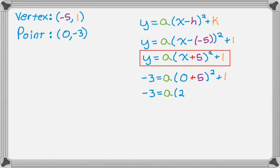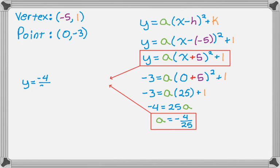Subtract 1. Or no, just square that. So I get negative 3 equals a times 25 plus 1. Now subtract 1 from both sides. Negative 4 equals 25a. So a must be negative 4 over 25. Put a box around that. And again, combine those to get my final answer.